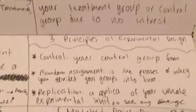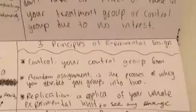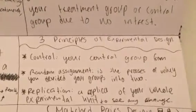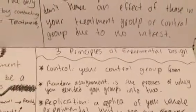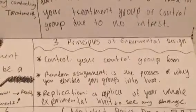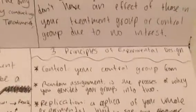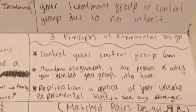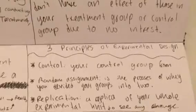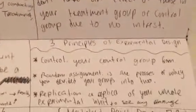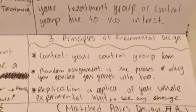Then we have the three principles of experimental design. First is control — your control group. Then it's your random assignment. And then it's replication. Control is a group that you give basic information to. Random assignment refers to the groups that are randomly chosen. Replication means repeating your whole experiment to see if there was a change in your result.